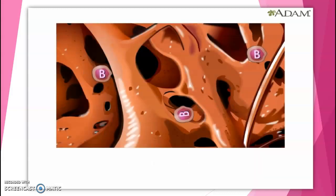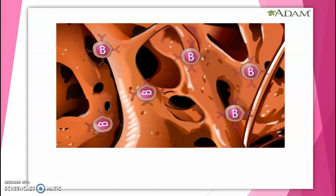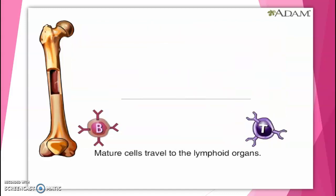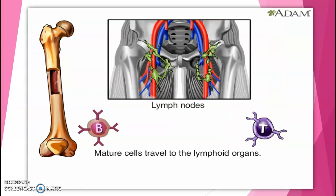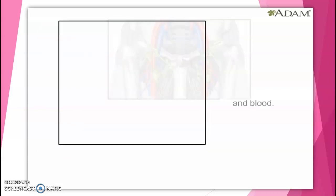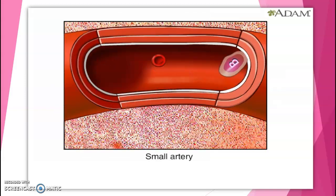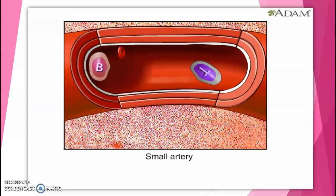The other group of lymphocytes is called B lymphocytes. They mature in the bone marrow and gain the ability to recognize specific foreign invaders. Mature B cells migrate through the body via the lymph nodes, spleen, and blood. Both B cells and T cells circulate in fluid and blood, searching for foreign invaders.